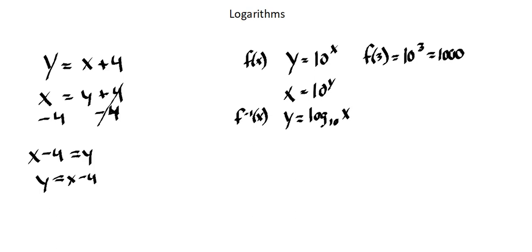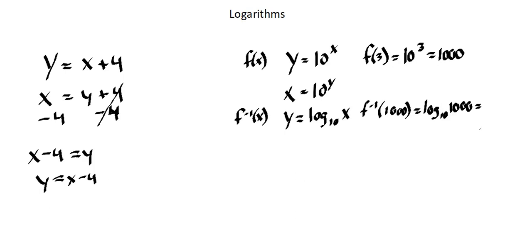Now let's compare that to the procedure in the inverse function. My first step was to switch my x and y variables, so in calculating a value of 1000 for y in the original function, that's going to be my x value in the inverse function. So the inverse function of 1000 equals log base 10 of 1000, and the y answers the question: what power do I raise 10 to to arrive at 1000? That power is 3.